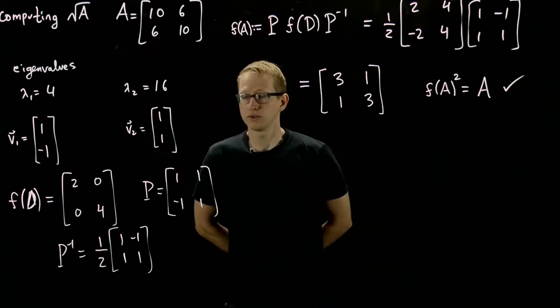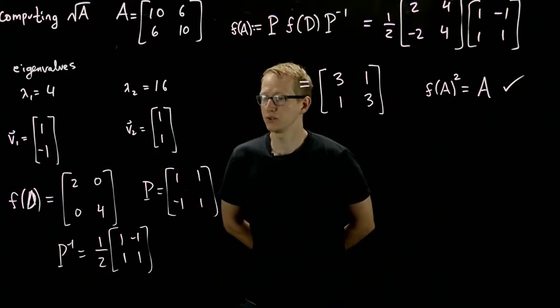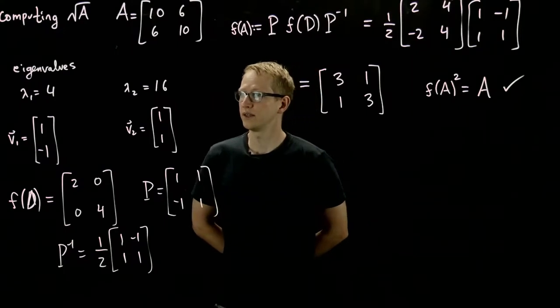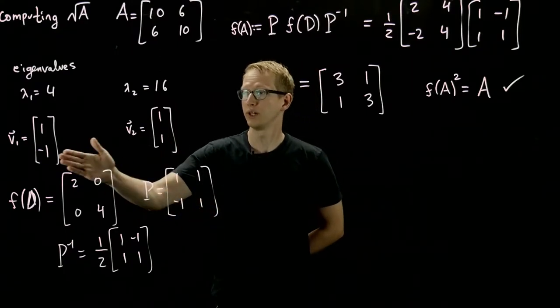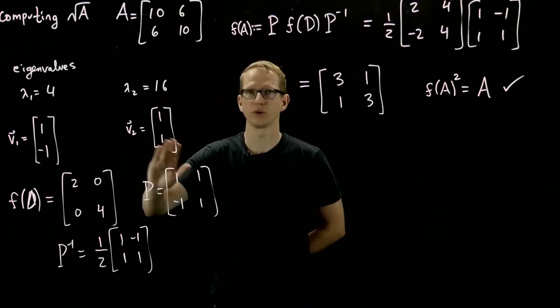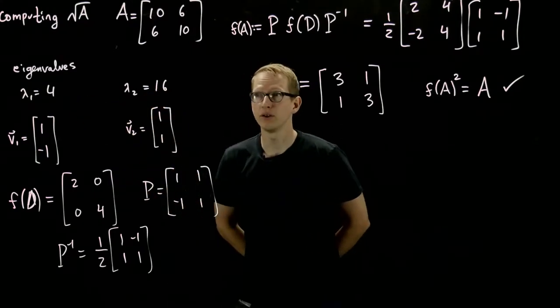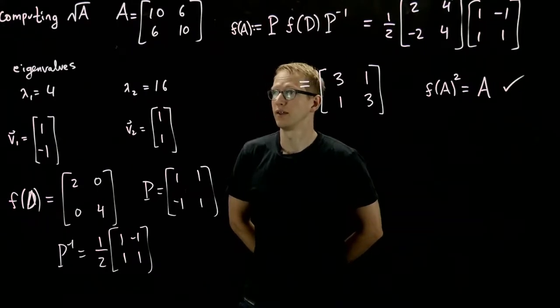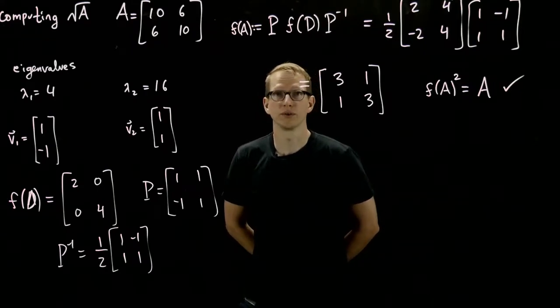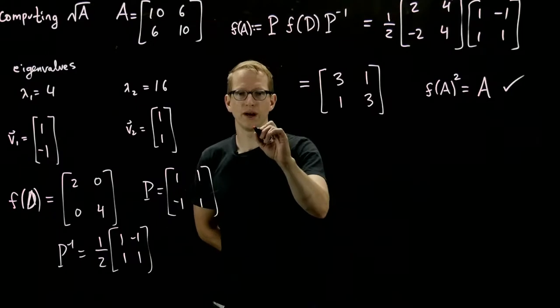And supposedly we have another way of doing this. And the interesting thing about the following method is that we will not need to use the corresponding eigenvectors. All we need to use are the corresponding eigenvalues. And we'll find that polynomial that allows us to compute the square root of this matrix.